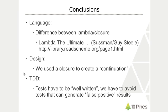I recommend you to read the series of papers called Lambda the Ultimate — Lambda the Ultimate Declarative, Lambda the Ultimate Imperative, Lambda the Ultimate Goto — which are a series of papers written by Sussman and Guy Steele in the 70s when they were creating the Scheme language. They show you how a language can be built only with closures, and if you have closures then you don't need any special syntax to handle control flow structures in the language.